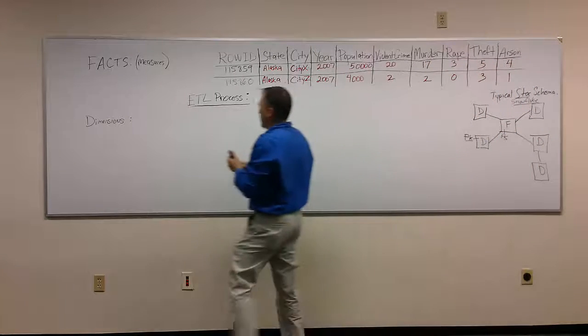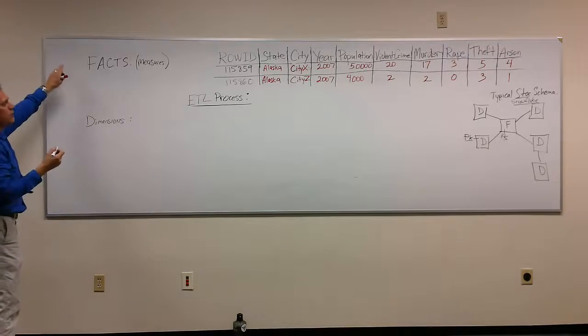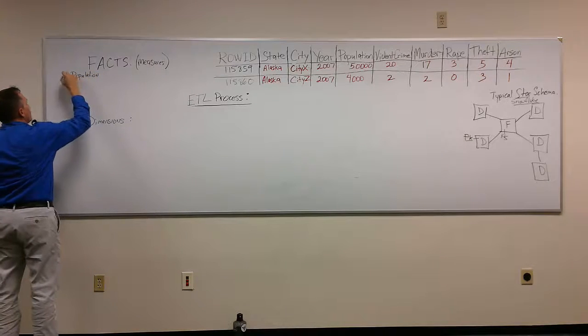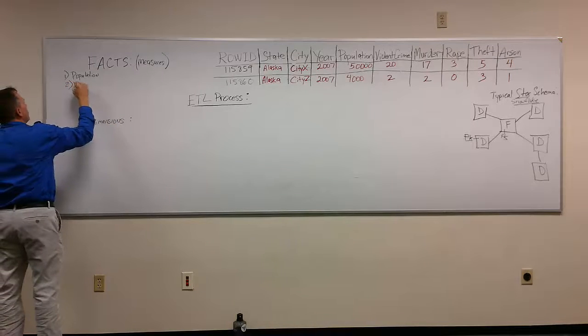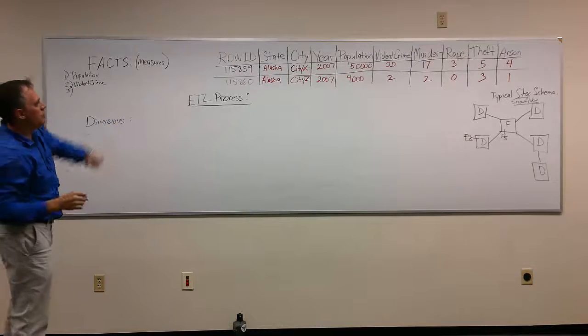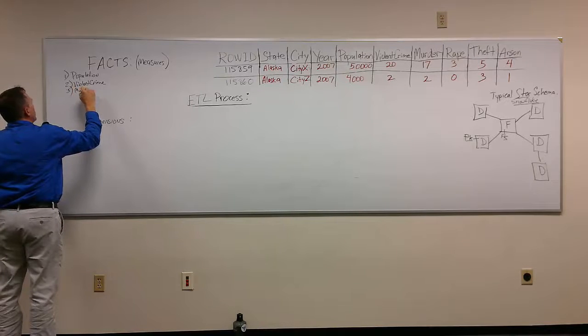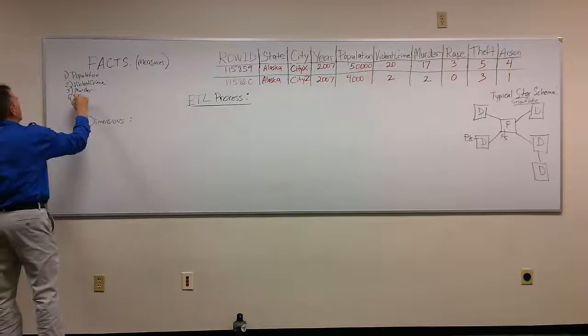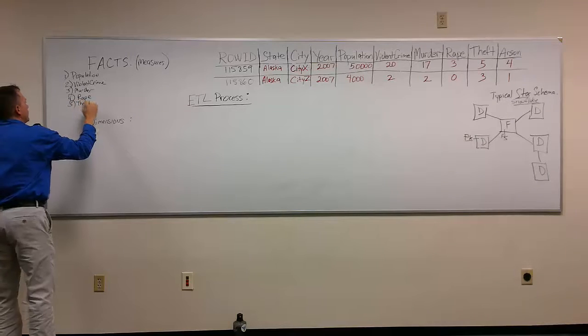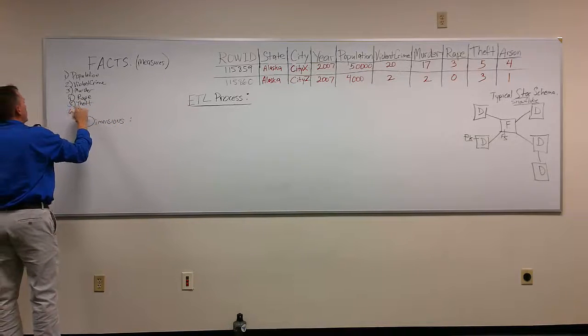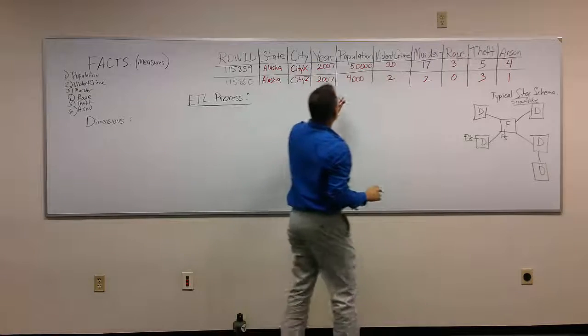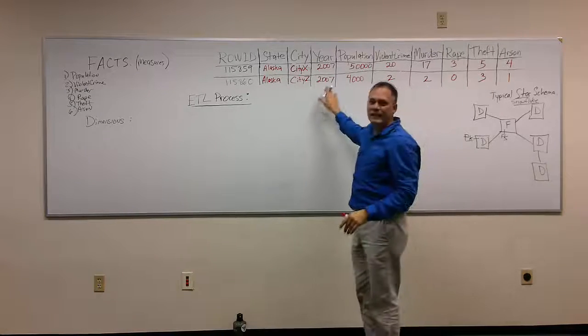Okay, so these effectively become facts. So over here, we would list, we said that population, that's 1, 2, we said was violent crime, 3, we said was murder, 4, it's rape, 5, we said is theft, and 6, we said is arson. Okay, so here we've identified easily right off the bat, we just went for the easy target. We'll come back to the year here in just a moment.